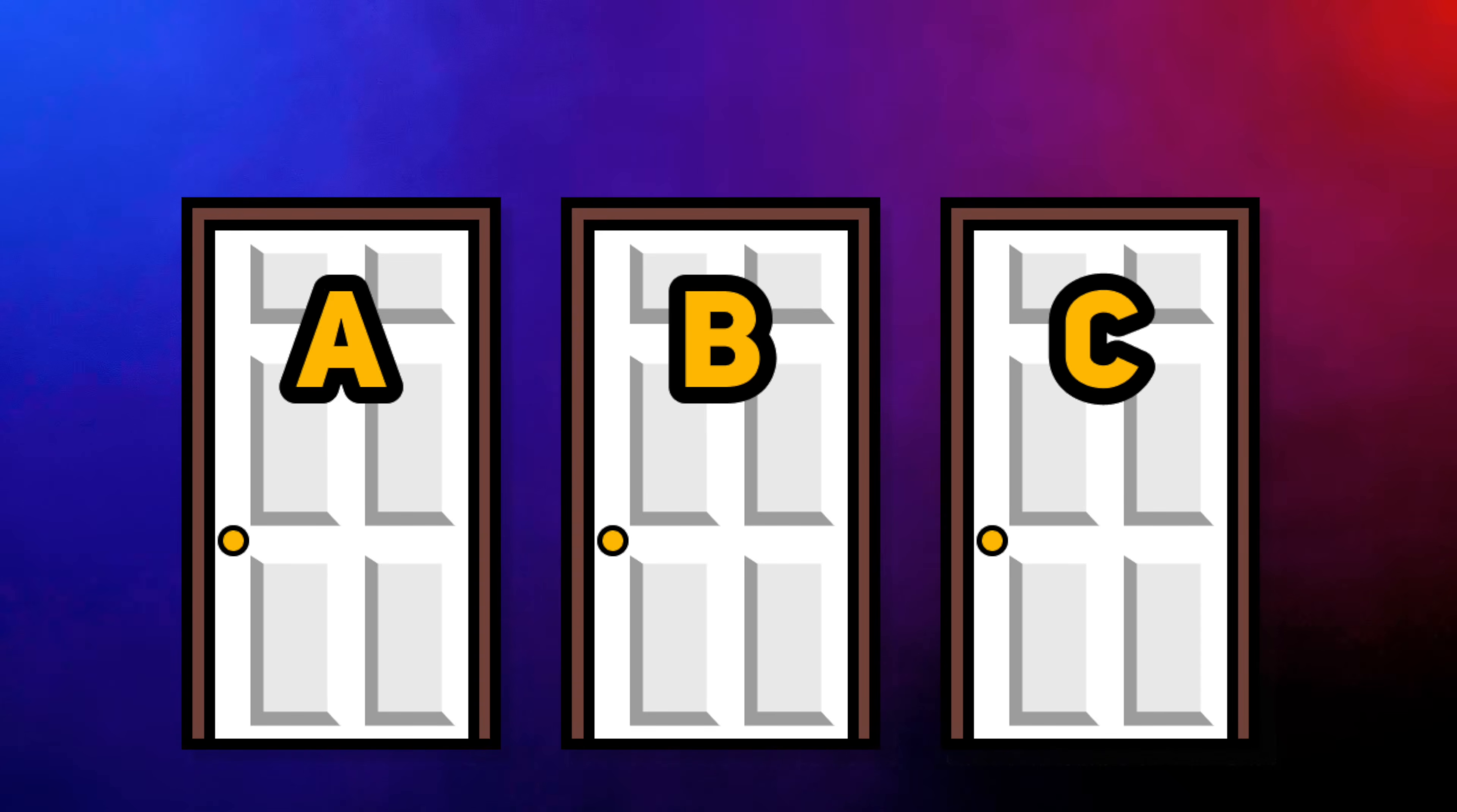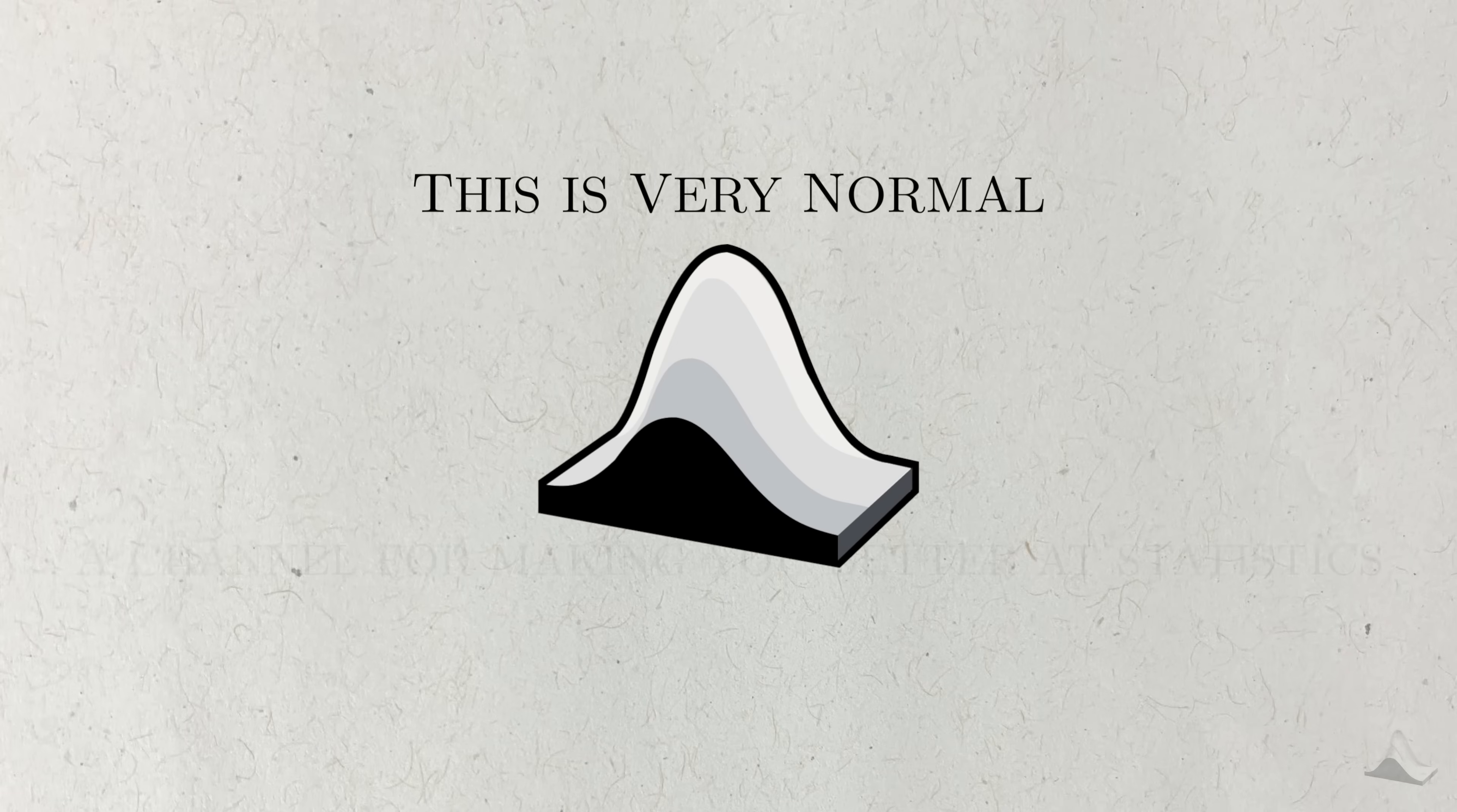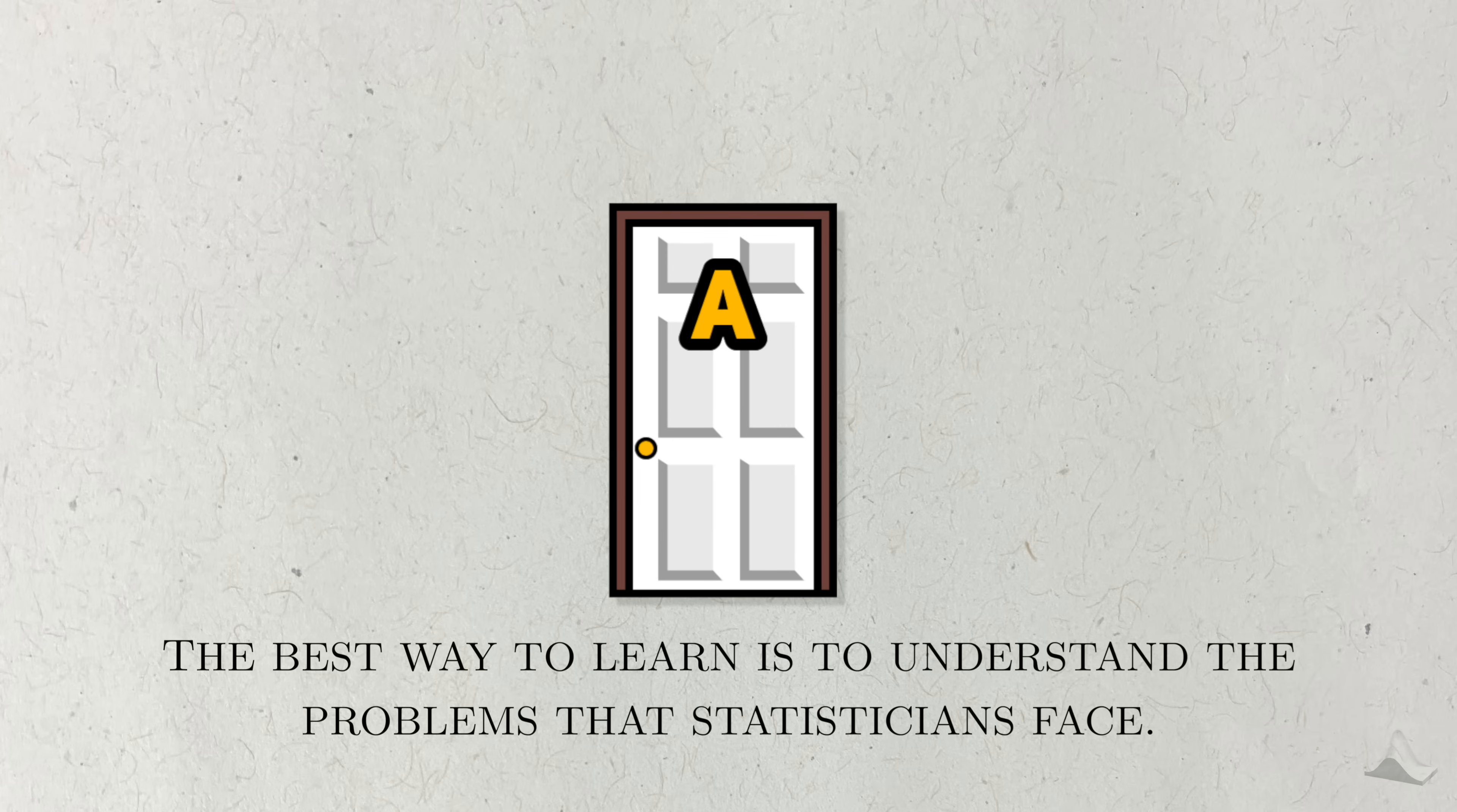But underneath this simple problem is a question that lies at the center of statistics. So in this video, I want to explore what that connection is. If you're new here, my name is Christian and this is Very Normal, a channel for making you better at statistics. The best way to do that is to understand the problems that statisticians face. Sometimes this includes probability problems.